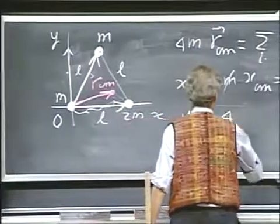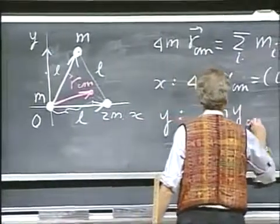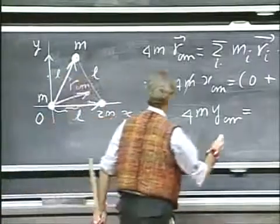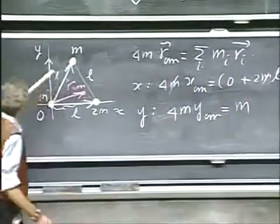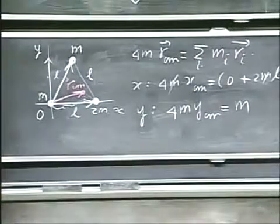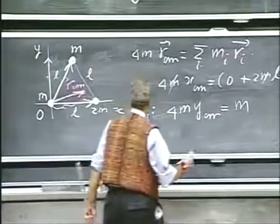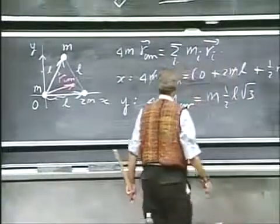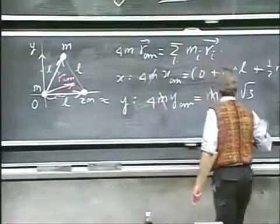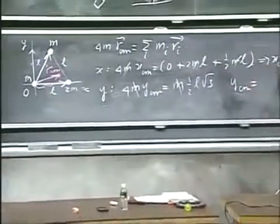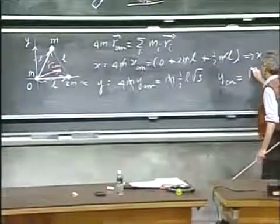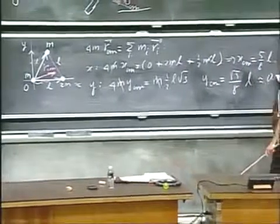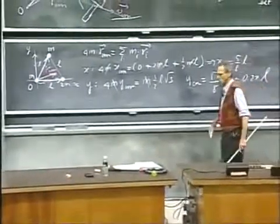So you're going to get that 4m times y of the center of mass equals this mass m times the y component of that position vector, and that is one-half l square root of three. And so you lose your m, and so you see that y center of mass then becomes the square root of three divided by eight times l. And I think that's about 0.22l very roughly.